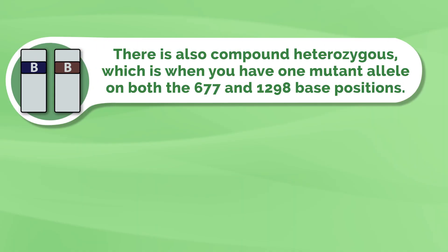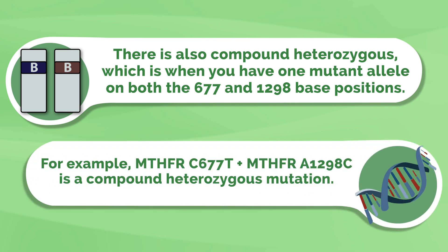It's not hard to see why this stuff is confusing and complicated. There is also compound heterozygous, which is when you have one mutant allele on both the C677 and 1298 base positions. For example, MTHFR C677T plus MTHFR A1298C mutations is a compound heterozygous mutation.